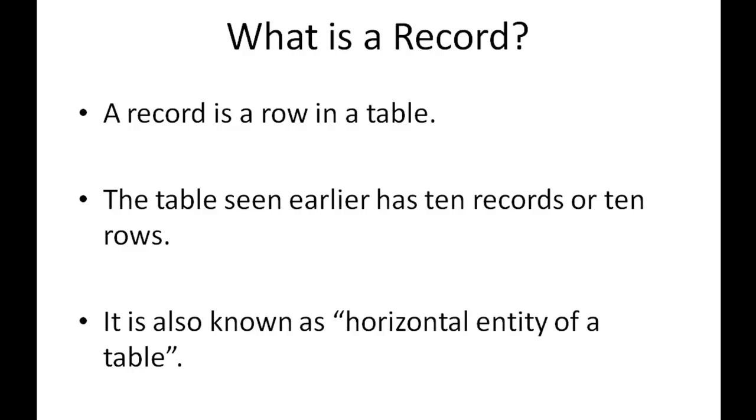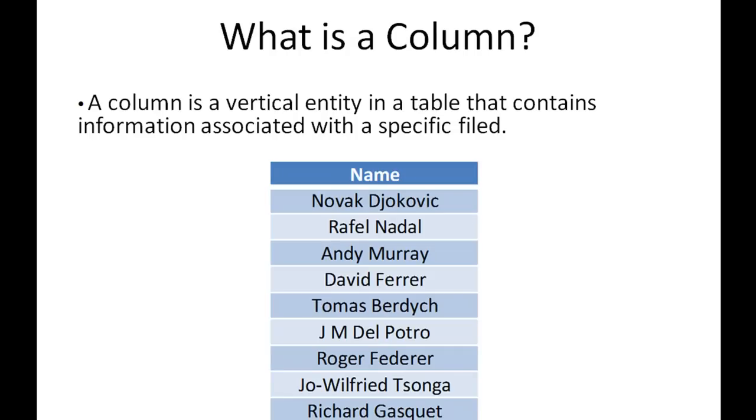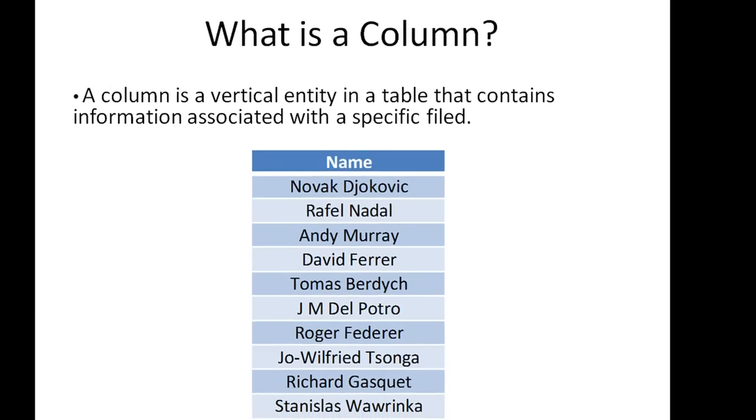A record is also known as a horizontal entity of a table. You don't need to remember this, but some people might be writing exams on SQL, so you can find questions such as these: what is the difference between horizontal entity and vertical entity of a table? A column is a vertical entity and a record is a horizontal entity, and this is in fact what we're going to talk about in the next slide.